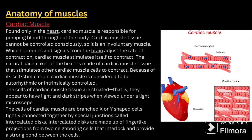Next comes cardiac muscle. Cardiac muscle is found only inside the heart and is responsible for pumping blood throughout the body. Cardiac muscle tissue cannot be controlled consciously, so it is an involuntary muscle. While hormones and signals from the brain adjust the rate of contraction, cardiac muscle stimulates itself to contract. The natural pacemaker of the heart is made up of cardiac muscle tissue that stimulates other cardiac muscle cells to contract. Because of this self-stimulation, cardiac muscle is considered to be autorhythmic or intrinsically controlled. The cells of cardiac muscle tissue are striated — they appear to have light and dark stripes when viewed under the microscope.